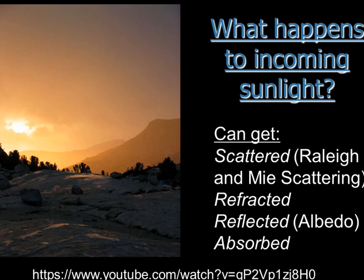Here are the four things that happen to sunlight once it interacts with our atmosphere: the energy can get scattered — we're going to learn about two types, Rayleigh scattering and Mie scattering — light can get refracted, it can get reflected, and it can get absorbed. There's a link provided on Canvas that will help you understand Rayleigh scattering.